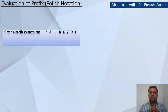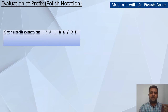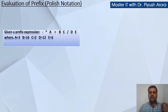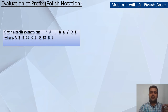Aap sabhi jante hai ki prefix expression mein zyada tar yani ki sabhi operators left side mein aate hai. So this is the expression which is given: minus multiplication a plus bc divide de. Ismein agar hum a, b, c, d, aur e ki values assume karein — a equal to 3, b equal to 16, c equal to 2, d equal to 12, and e equal to 6.